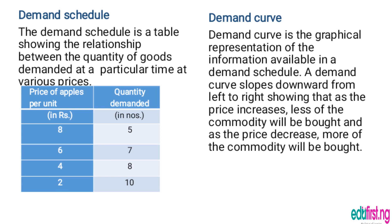Price of apple: when the price of apple is 8, quantity demanded is 5; price 6, quantity 7; price 4, quantity 8; price 2, quantity 10.